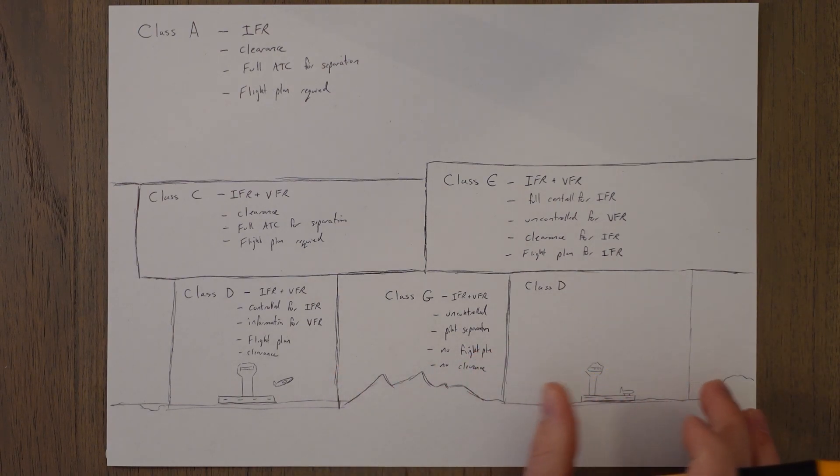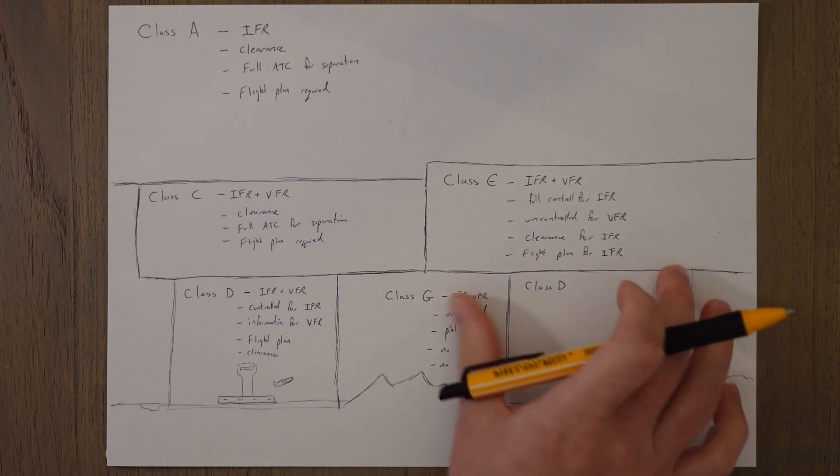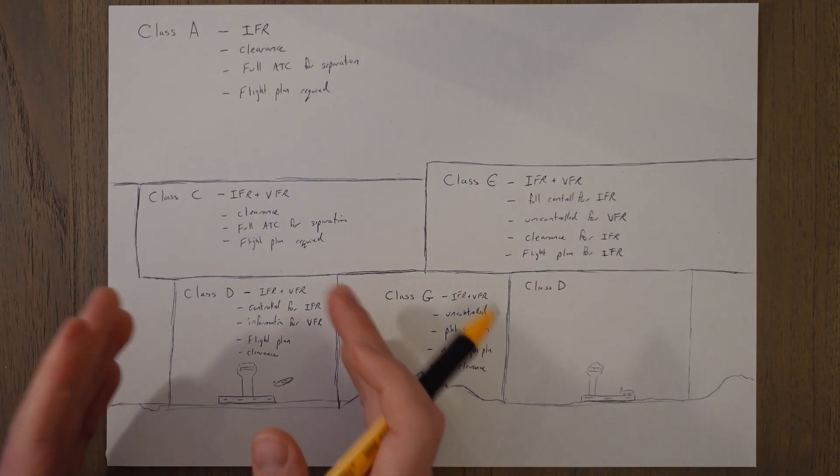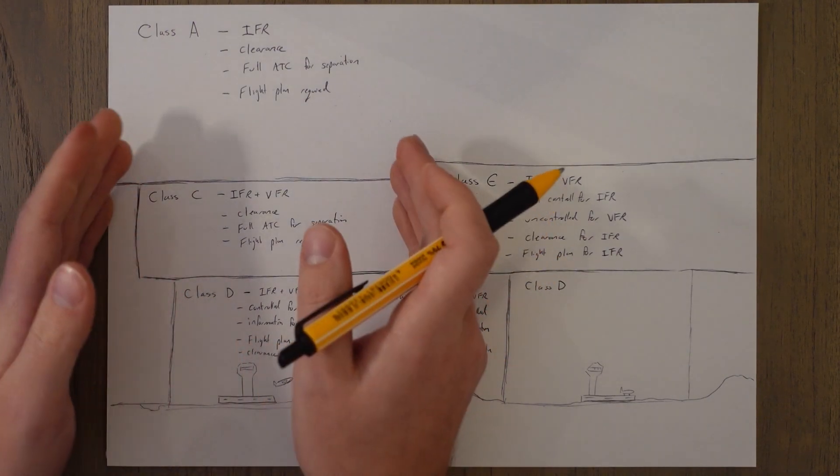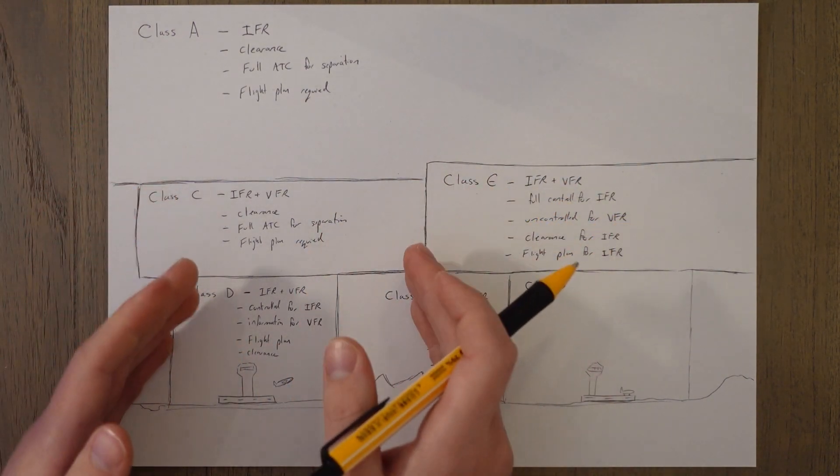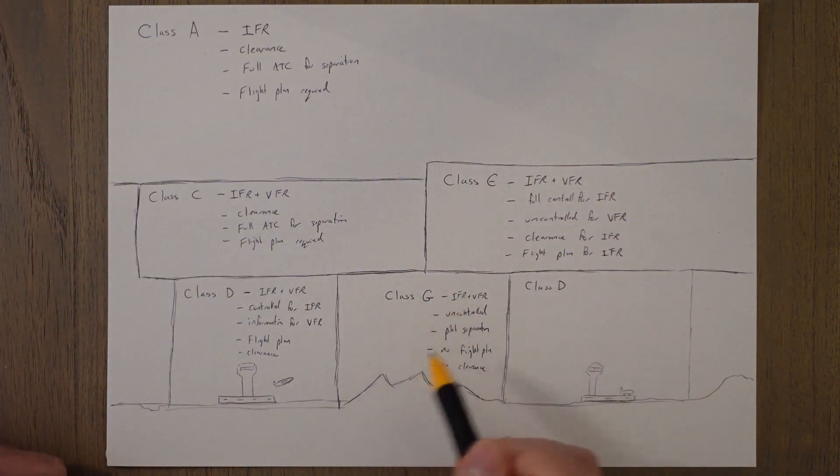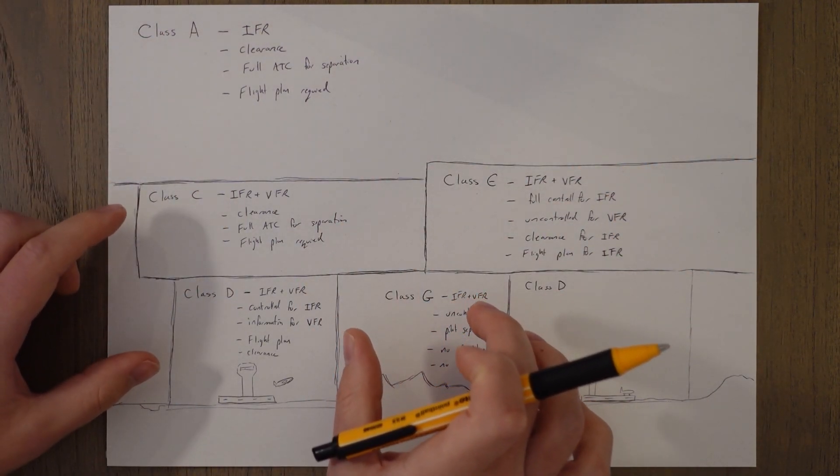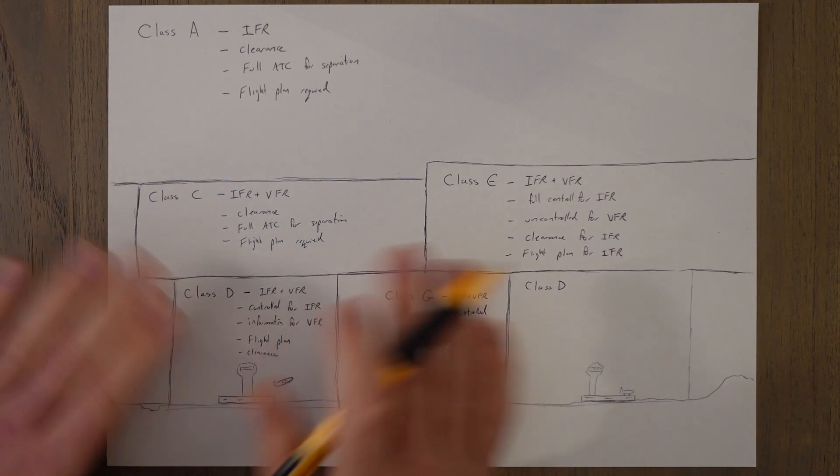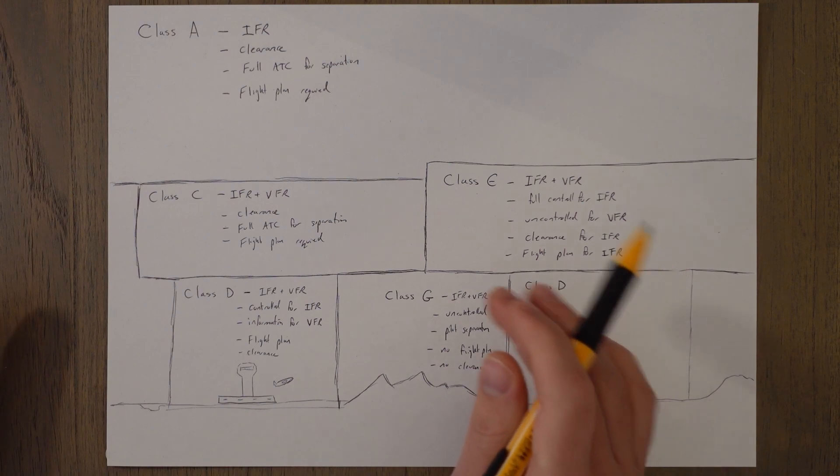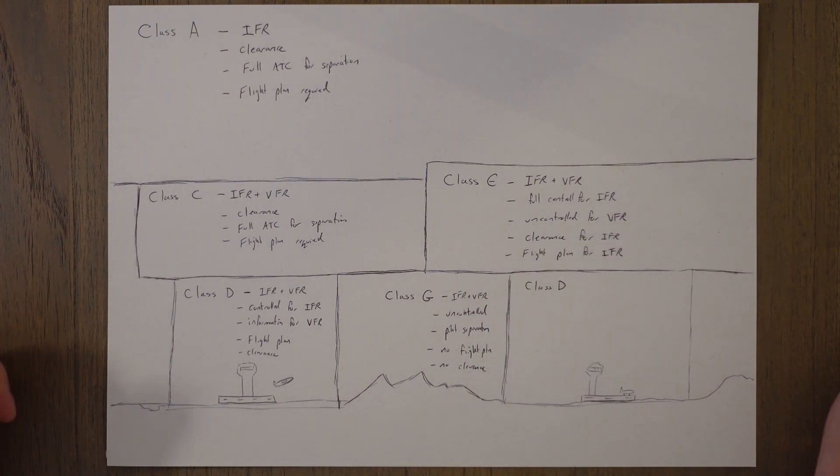So class G if you think about that analogy right at the start of the upside down cake, you get the bigger tiers as you go up and class G would fall almost into the negative spaces in between. It's the uncontrolled bit you can fly through that at your heart's content as long as you're looking out the window for other aircraft. You don't even need a radio to fly in class G even if you're IFR.